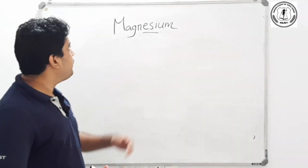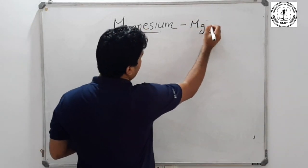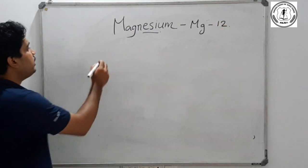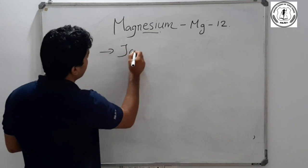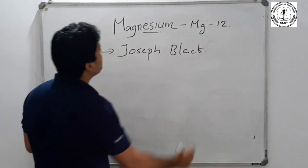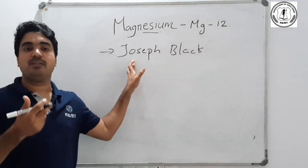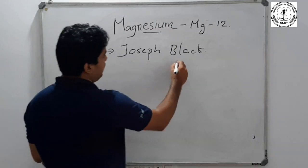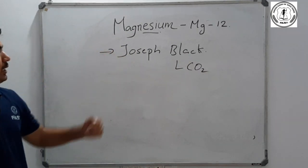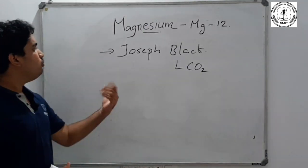Now we look at magnesium. The symbol of magnesium is Mg and its atomic number is 10. The father of magnesium is Joseph Black. Joseph Black is also called the father of carbon dioxide.